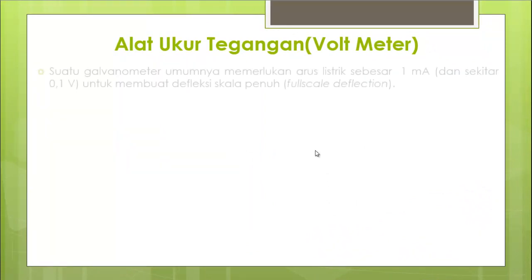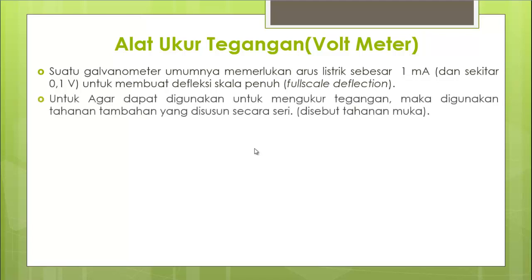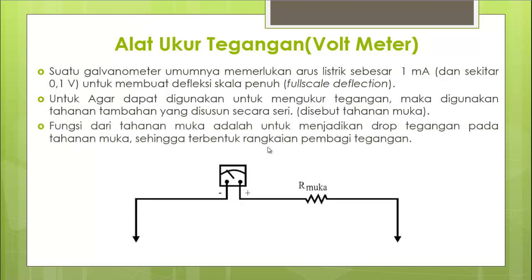Kemudian alat ukur tegangan, yaitu voltmeter. Galvanometer juga memerlukan arus listrik yang sangat terbatas: 1 mA dan tegangan sekitar 0,1 volt untuk defleksi skala penuh. Bagaimana jika ingin mengukur lebih dari 0,1 volt? Perlu ditambahkan tahanan secara seri, menggunakan prinsip hukum Kirchhoff ke-2. Saat resistansi dihubung seri, akan terjadi drop tegangan di masing-masing resistansi, sehingga tegangan yang masuk ke alat ukur berkurang karena sudah ada nilai R muka.